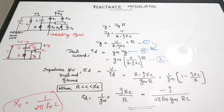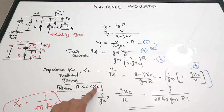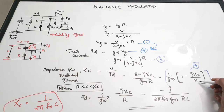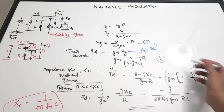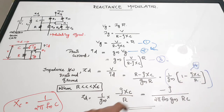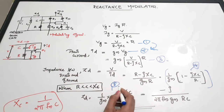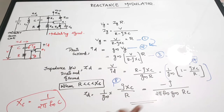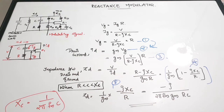Simplifying: Zd = (1/gm) × (1 − jXc/R). Substituting Xc = 1/(2π·fm·C), where fm is the modulating signal frequency. If R is much less than Xc, the equation simplifies to Zd = (1/gm) × (−jXc/R), giving the final equation for drain-to-ground impedance as Zd = −j / (gm × R × 2π·fm·C).